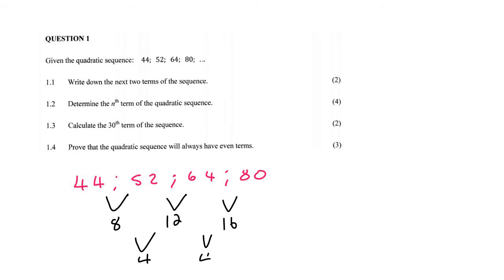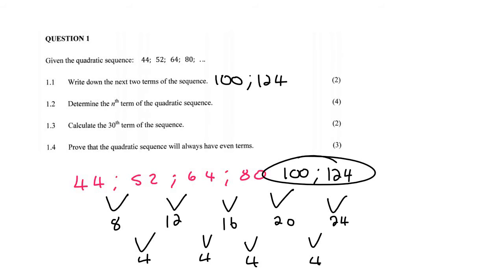We're going up in 4s, so that means this number would be 20. If you add on 20, then this would become 100. And then if you add another 4, this would mean that we are now adding on 24, so that would be 124. And so those are the next two terms, 100 and then 124.